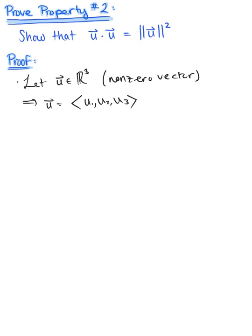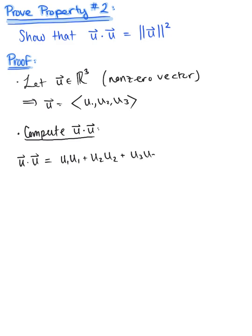Let's start by looking at the left-hand side of this property — computing the dot product of vector u with itself. Vector u dot vector u gives us u₁ times u₁ plus u₂ times u₂ plus u₃ times u₃, which is equivalent to u₁ squared plus u₂ squared plus u₃ squared. We can't go any further than that, so we'll pause here.